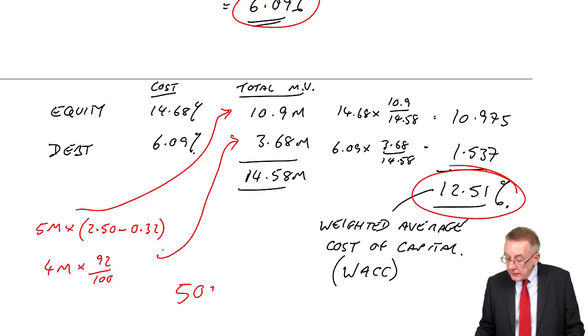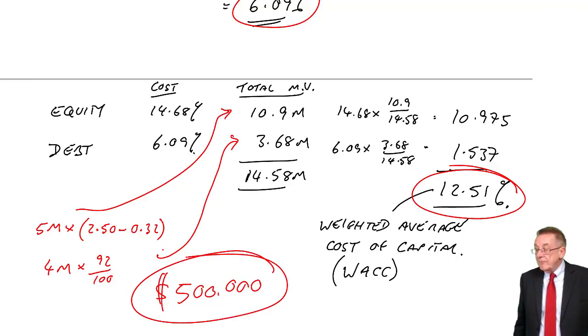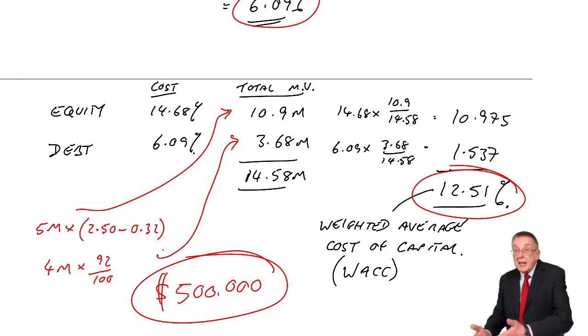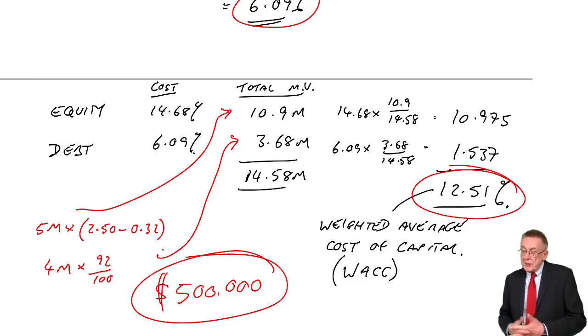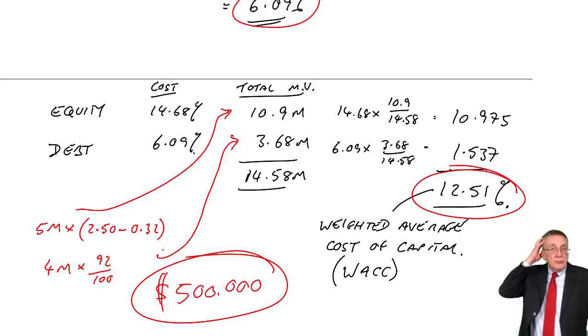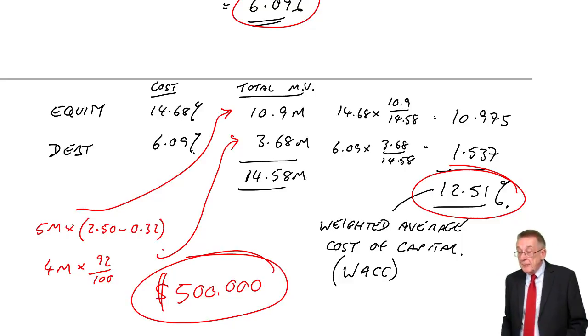But suppose I told you that this company was considering a new project, which needed, let's say, 500,000. We need to raise 500,000. Here's how we're currently financed. Equity 10.9 million, debt 3.68. We're going to raise another half million for a new project. Well, of course, I could raise it various ways. I could raise the money all from equity. I could raise the money all from debt. Or I could raise part from equity, part from debt.